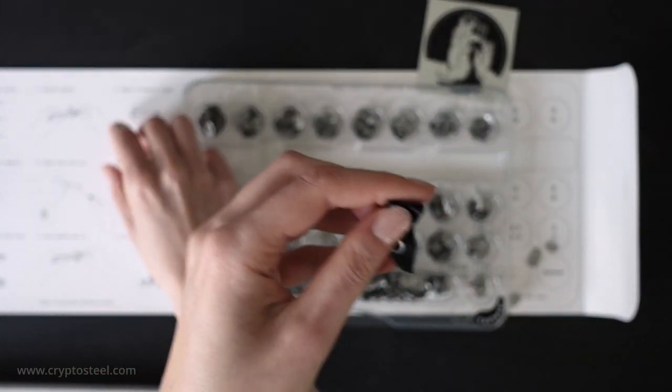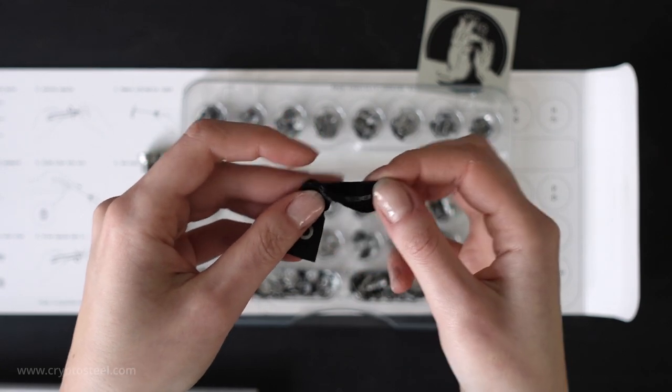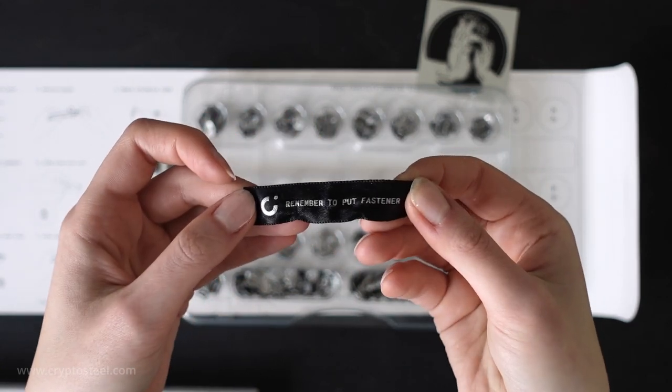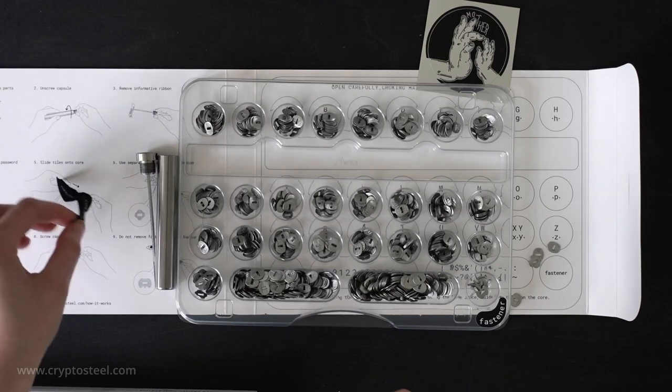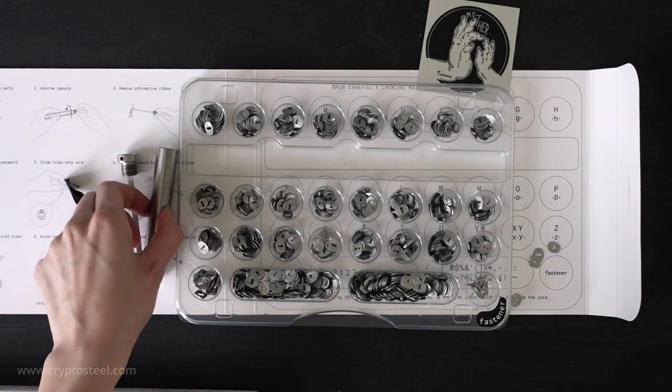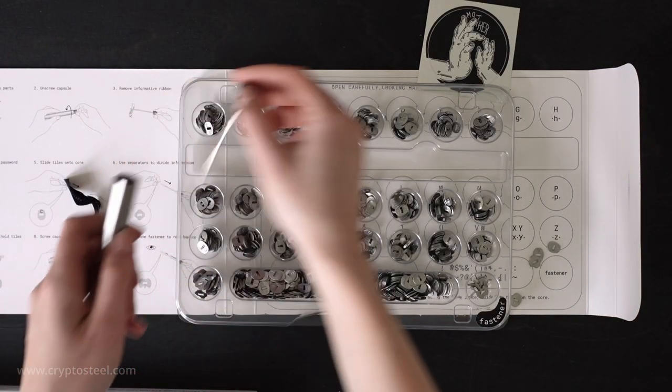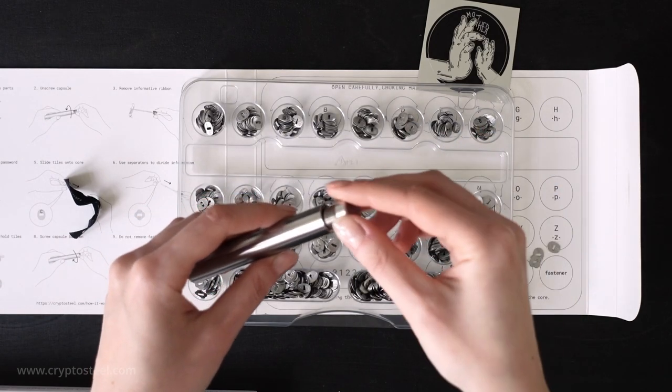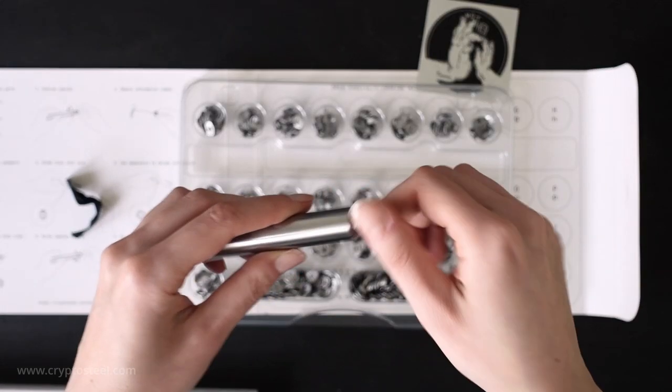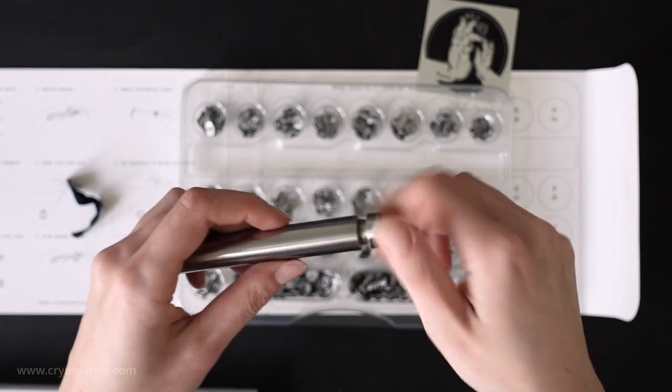The ribbon at the end of the core proves you have acquired a brand new CryptoSteel product. It is also a reminder to put on the fastener to secure your recovery seed phrase. Screw the core back into the capsule after entering your recovery seed phrase and enjoy peace of mind.